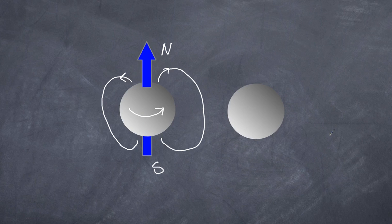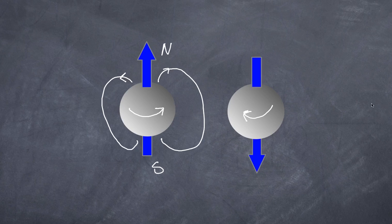What can also happen is that a proton can spin in the opposite direction. As a result, it will produce a magnetic moment in the opposite direction. So here I have a proton with a magnetic moment pointing up — we call it spin up. And over here we have a proton with a magnetic moment pointing down — we call it spin down.